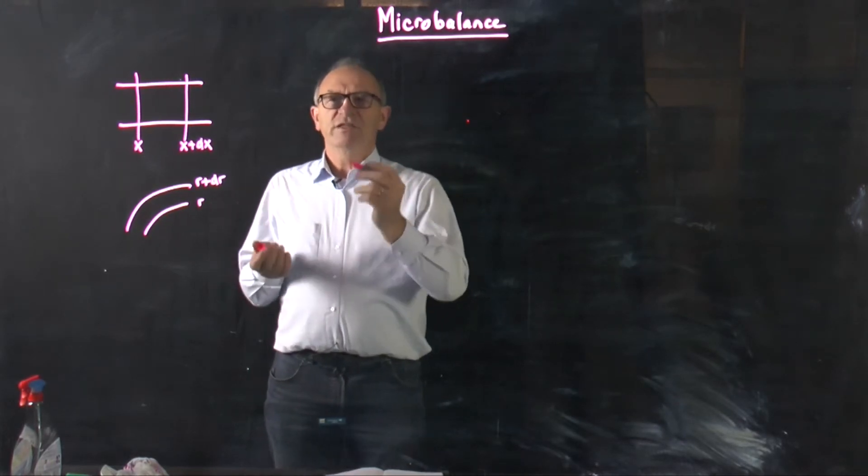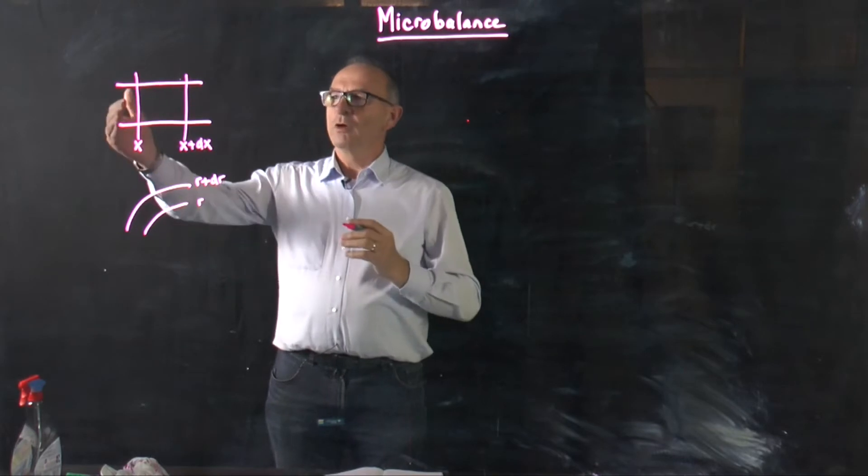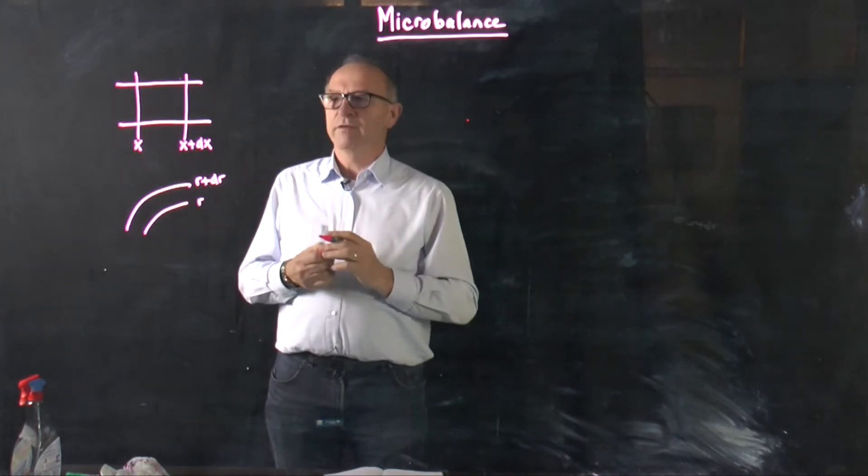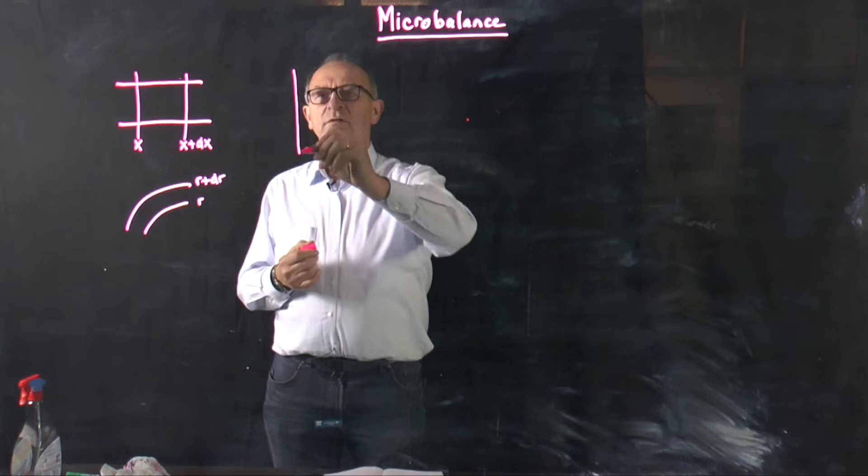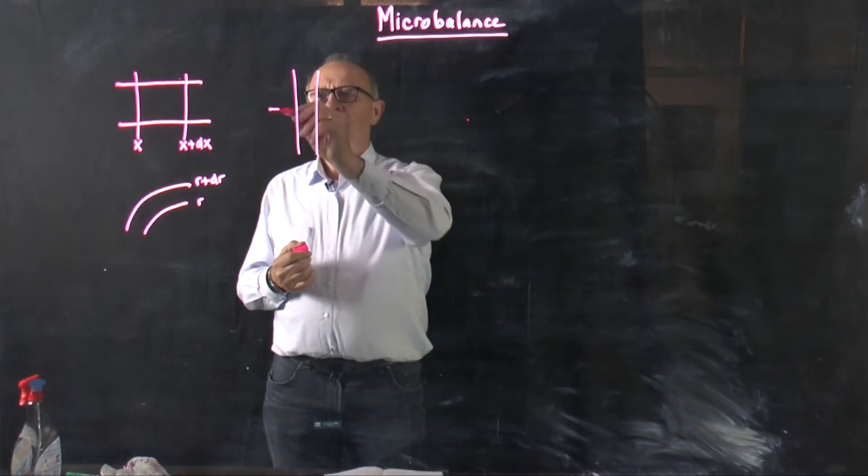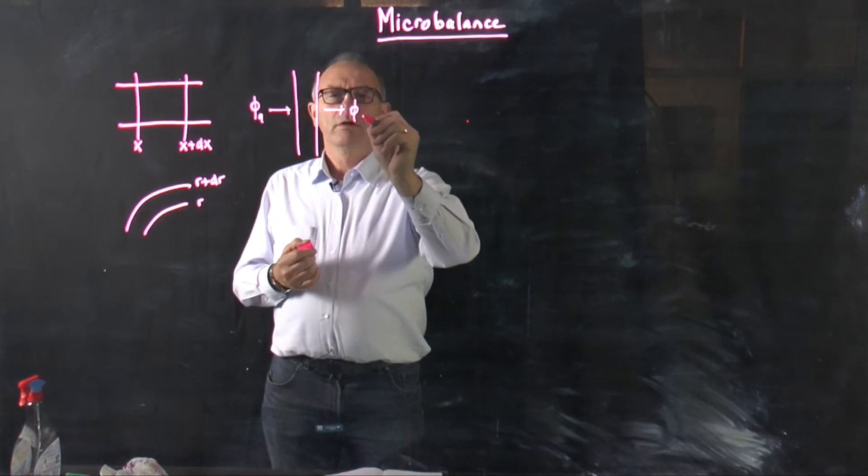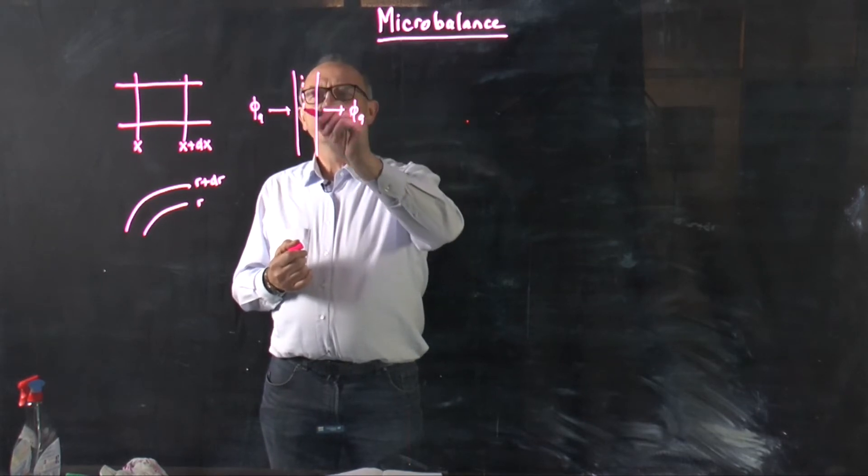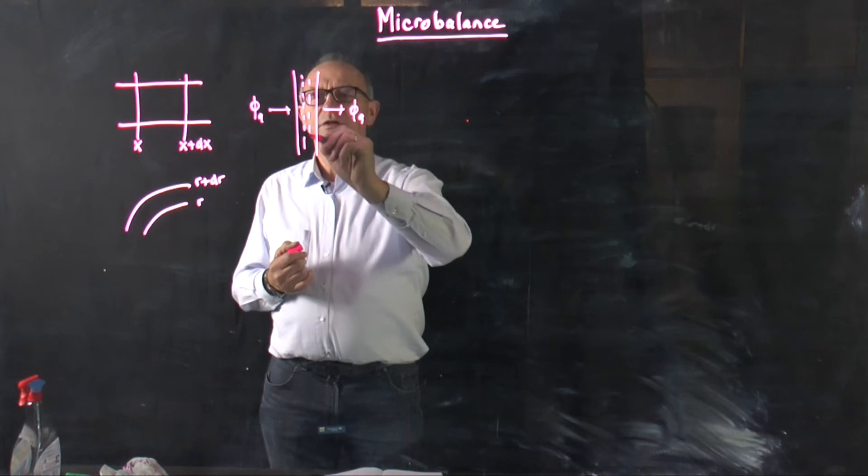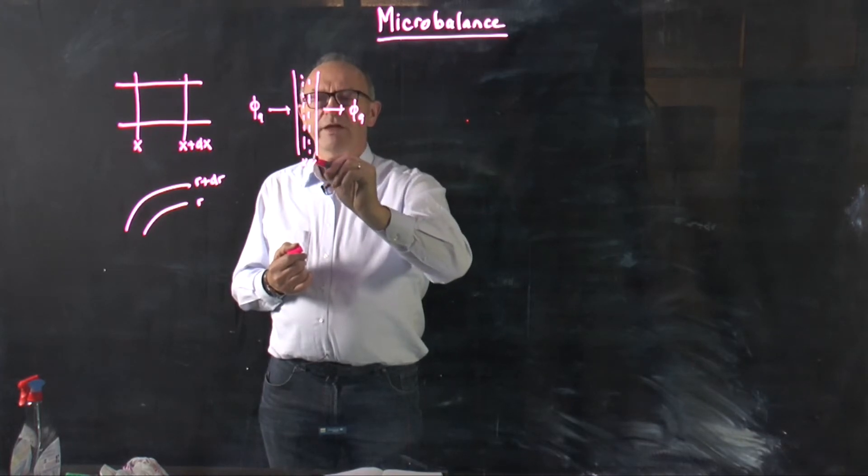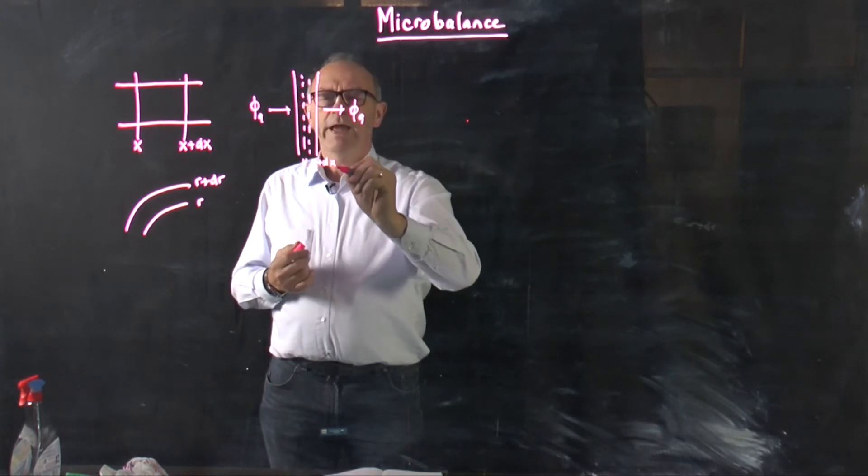Let's assume that we have a steady state conduction through a thick plate for example. So we have a plate and we have a conduction phi q through it. Then we could distinguish here in between a layer between x and x plus dx and look what is happening.